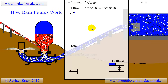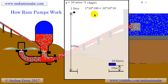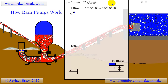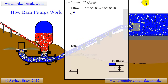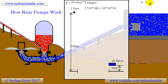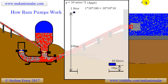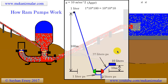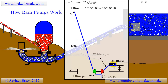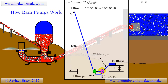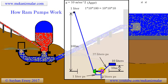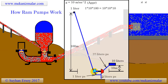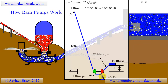Now imagine we don't know anything about ram pumps and we want to pump water to higher elevation using nothing but the power of the water itself. This would be easy if we had a water turbine and a conventional pump. We can take the large volume of water from the low water head and feed the turbine with this water. A small portion of this water is fed to the pump while we dispose a large quantity to the environment.